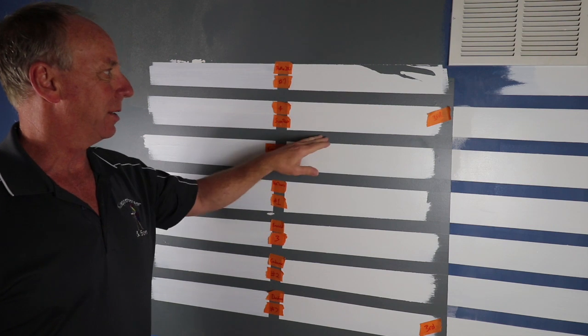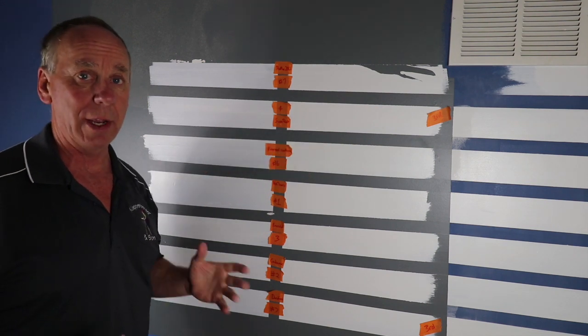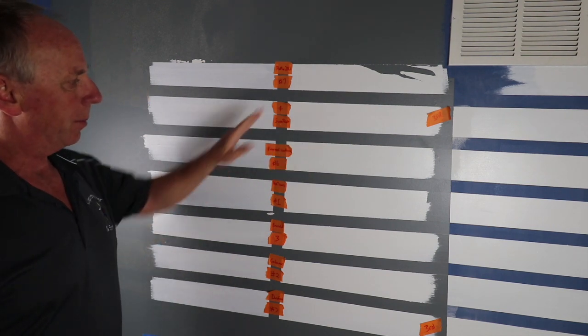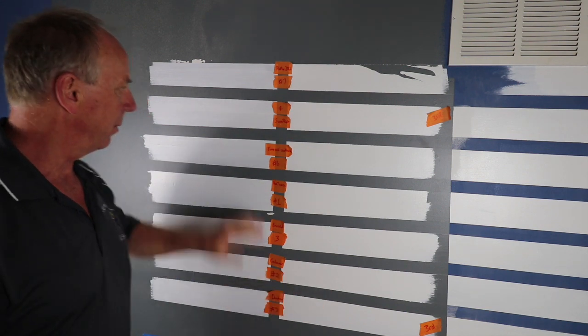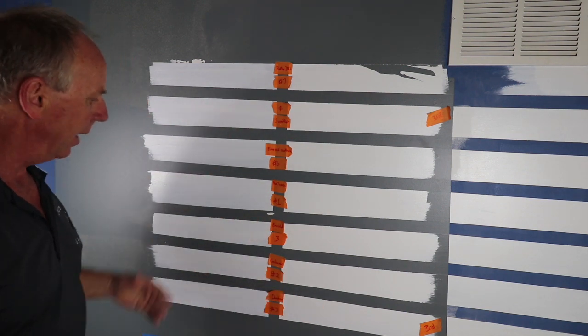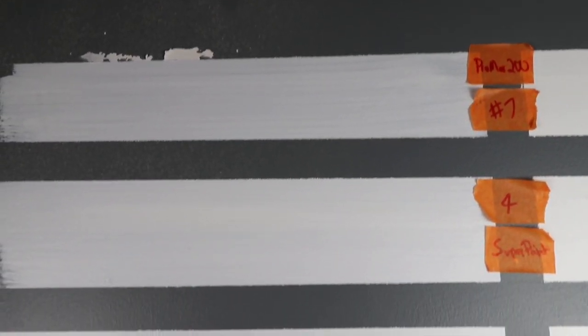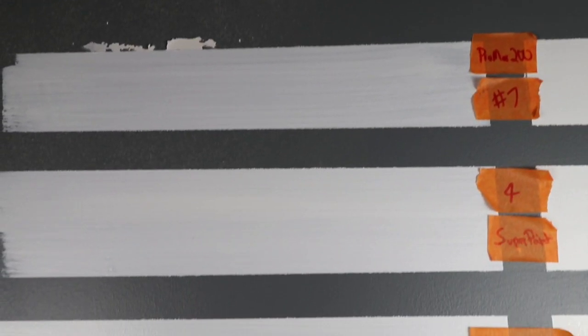Taking a look at our second color, a medium dark gray primer, we put two coats on this side of the seven paints, and one coat on this side. If I had to quickly tell you which ones performed the best on one coat, it would be the Cashmere.